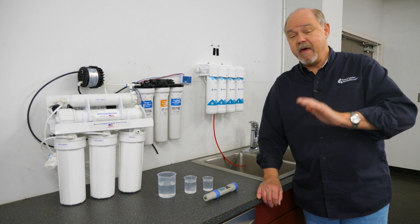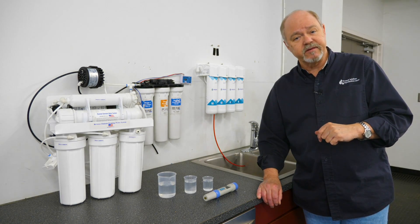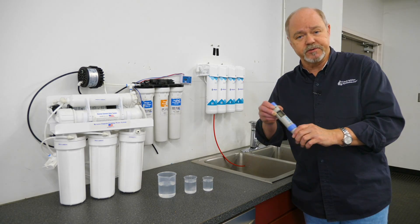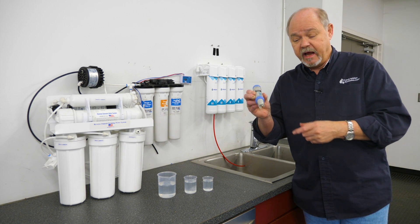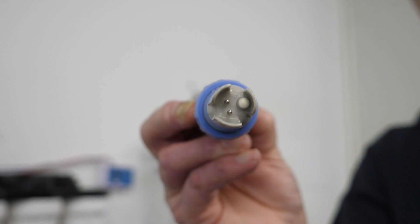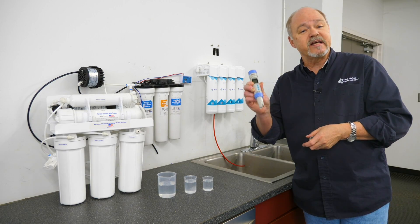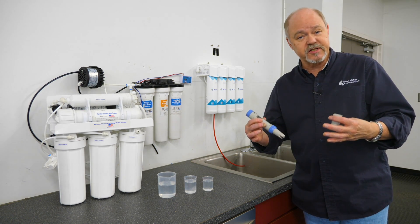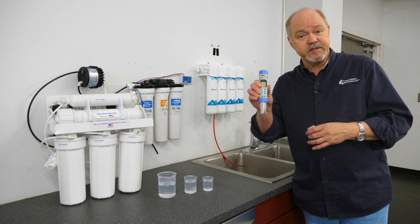Well TDS is a measurement of those dissolved solids and it does that through conductivity and the salesman had one of these types of TDS meters and he put this in the water that came out of the filter and it puts a little bit of an electric current between the two probes on the bottom of the meter. It's testing for how conductive the water is. The higher the level of dissolved solids in the water the higher the level is going to read on the TDS meter.